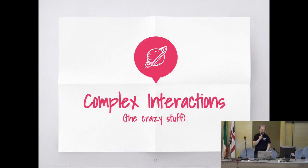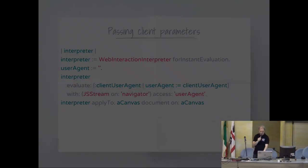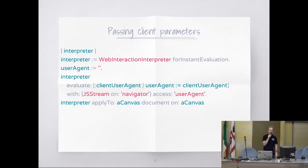Now we will see some more complex interactions and crazy stuff — though 90% of the time you end up using the simpler ones. Here we have an example that's doing an evaluate, but I need information that's in the browser. So I say the evaluate will need to pass that information with the call.